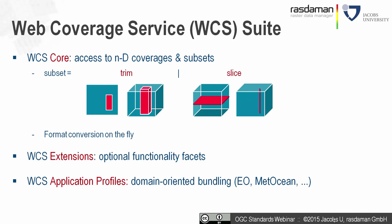A Web Coverage Service consists of modular parts. There is the core, which is mandatory — every implementation must support that functionality — plus extensions. The core is intentionally kept very simple: it allows access to coverages, multidimensional coverages, and subsets thereof. Since coverages are typically big data, subsetting is essential. That subsetting falls into two categories: trimming or slicing.